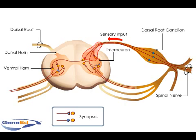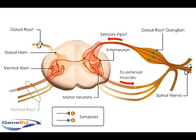The ventral horns contain the cell bodies of motor neurons. These neurons project axons out of the cord through ventral roots to supply muscles and glands.